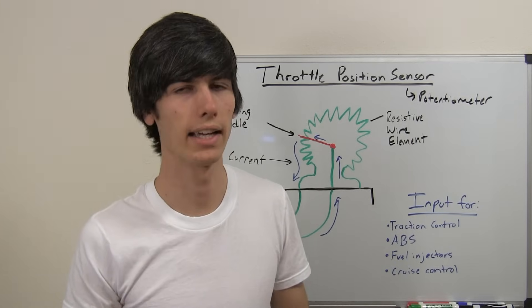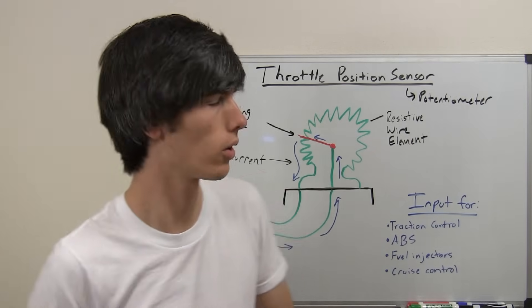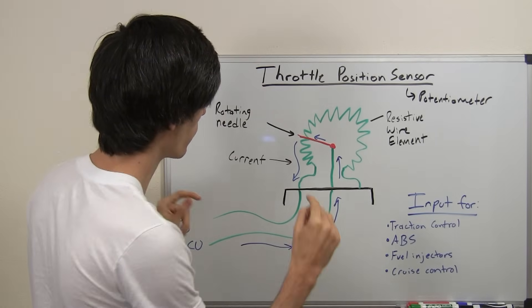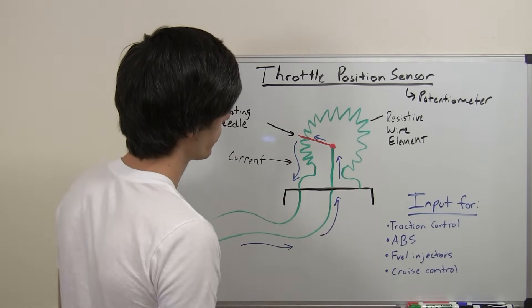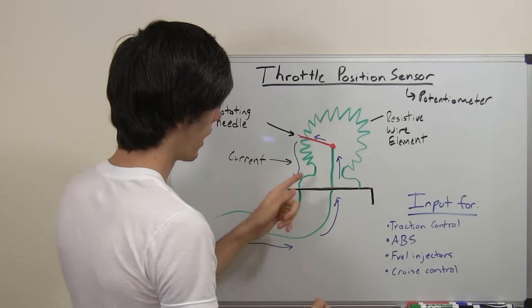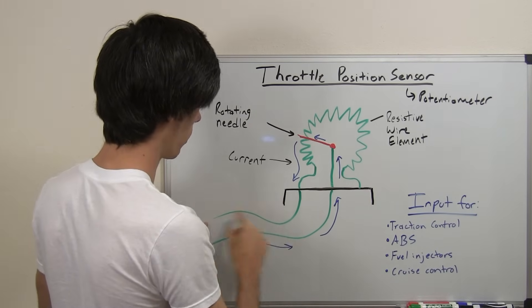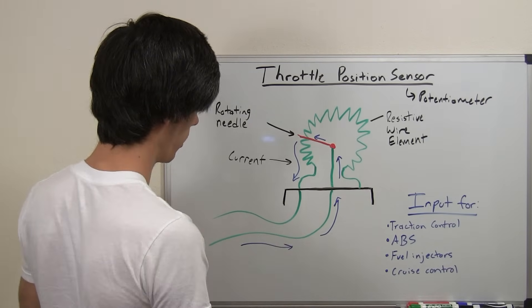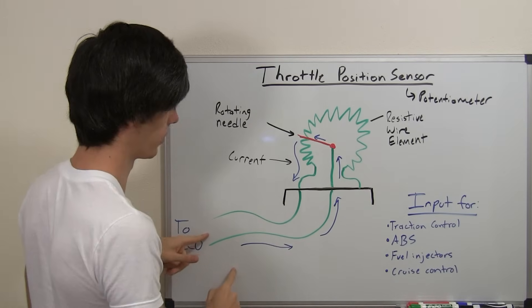Okay, so now that we know what that looks like, how does the ECU know where the throttle position is? Within that throttle position sensor there is a potentiometer. And what this does is you've got a wire running in and a wire running out that's reading to the ECU.